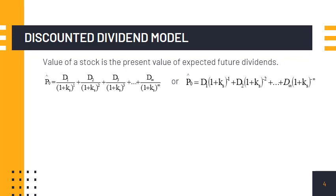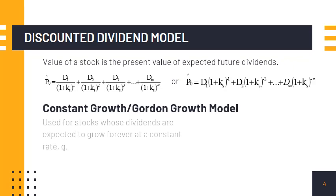A variation of the discounted dividend model is the constant growth or Gordon growth model, which is used for stocks whose dividends are expected to grow forever at a constant rate g. Hence, the dividend one year from now, or d sub 1, is computed as d sub 0 times the quantity 1 plus g.